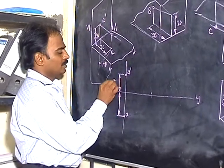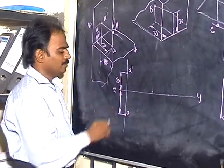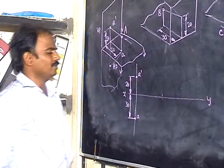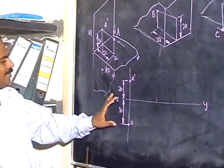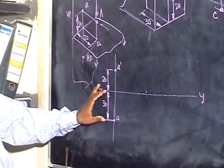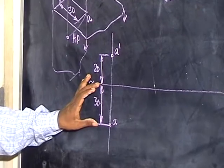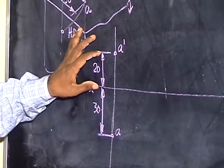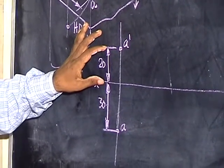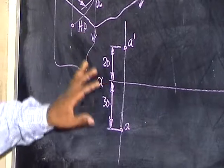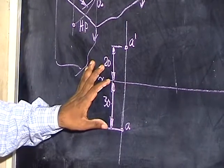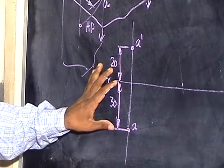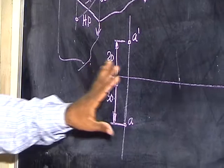In front of VP → below XY line. Above HP → above XY line. Therefore: below HP → below XY line. In front of VP → below XY line. Behind VP → above XY line. This is how you have to predict the positions.